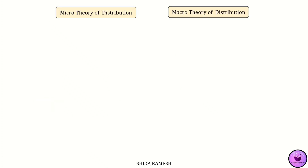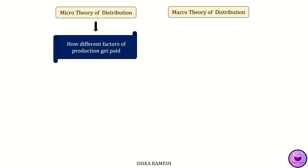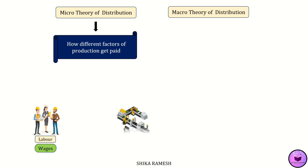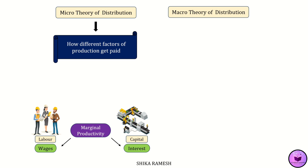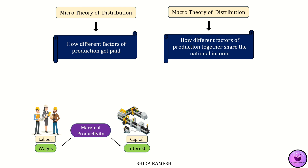There are micro and macro theories of distribution. The micro theory of distribution looks at how different factors of production — like land, labor, and capital — get paid. It helps us understand why workers get certain wages, why landowners receive rent, and why entrepreneurs earn profits. It's like zooming in on individual factors to see how their prices are decided.